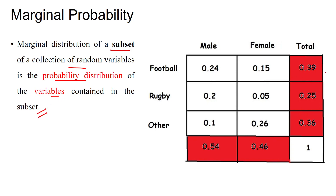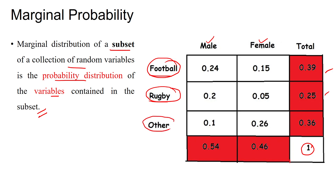These are all subsets, and the total is probability 1. Among these subsets: male is one subset and female is another. With respect to events, football-watching people form one subset, rugby-watching people another, and other-events-watching people another subset. But the total probability is 1. The subset of a collection of random variables represented by a probability distribution is called marginal probability.